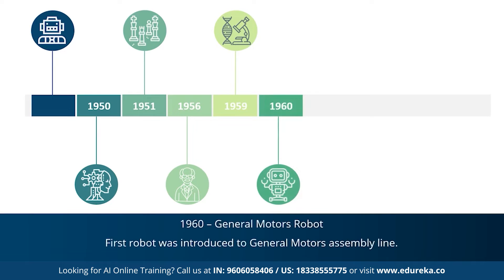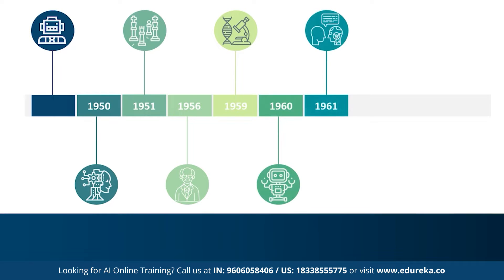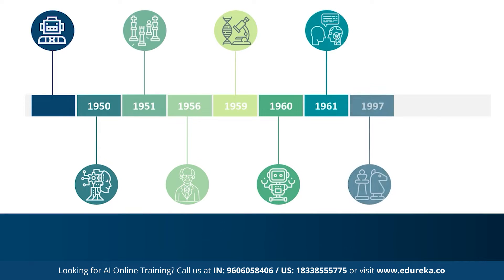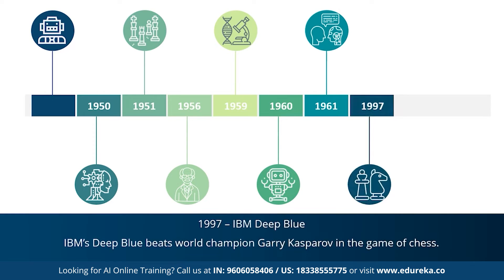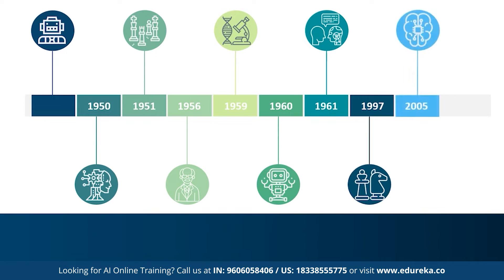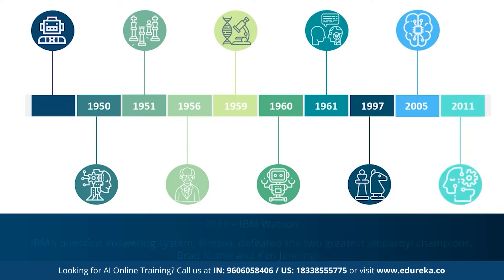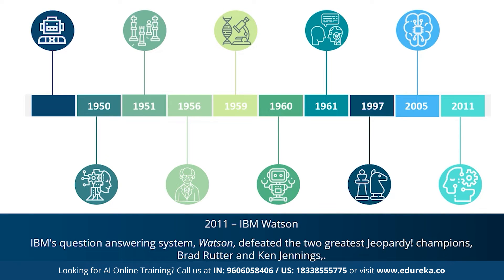In 1960, the first robot was introduced to the General Motors assembly line. In 1961, the first AI chatbot called Eliza was introduced. In 1997, IBM's Deep Blue beat world champion Garry Kasparov in chess. 2005 saw an autonomous robotic car called Stanley win the DARPA Grand Challenge. In 2011, IBM's Watson defeated the two greatest Jeopardy champions, Brad Rutter and Ken Jennings. That was a brief history of AI.